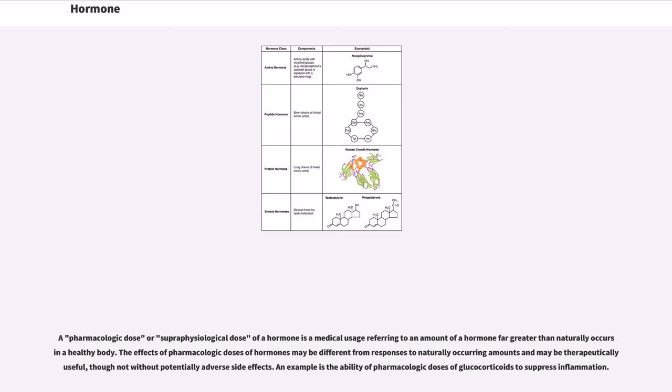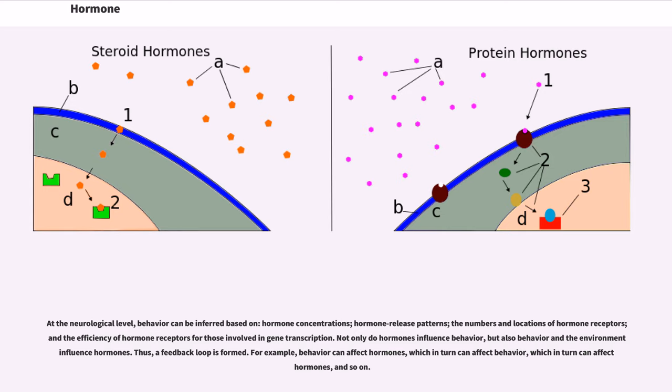A pharmacologic dose or superphysiological dose of a hormone is a medical usage referring to an amount of a hormone far greater than naturally occurs in a healthy body. The effects of pharmacologic doses of hormones may be different from responses to naturally occurring amounts and may be therapeutically useful, though not without potentially adverse side effects. An example is the ability of pharmacologic doses of glucocorticoids to suppress inflammation.